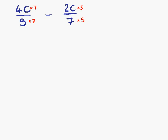So our new denominators, 5 times 7 is 35, and 7 times 5, which is also 35, as expected. On the top, we have 4c times 7, which is 28c, and we have 2c times 5, which is 10c.